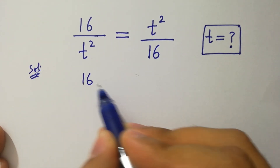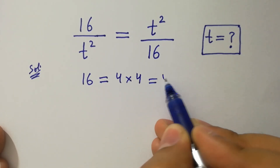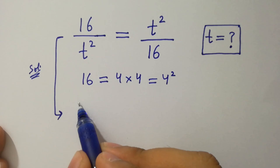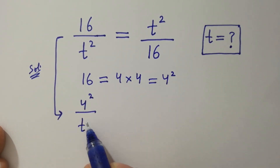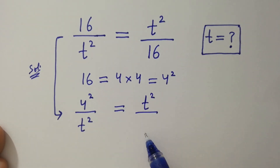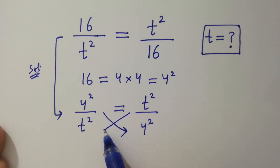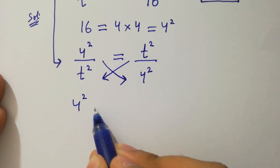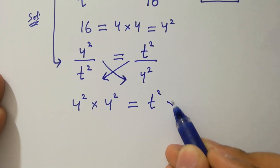Since 16 equals 4 times 4, which is 4 squared, then it will be 4 squared over t squared equal to t squared over 4 squared. By cross multiplication, we have 4 squared times 4 squared equal to t squared times t squared.